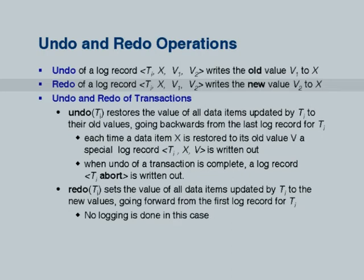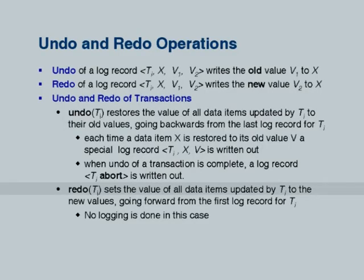What redo Ti does is: it takes the log records for Ti going forward and applies each operation — every time it finds a log record for that transaction it writes that new value to the data item. The data is fetched into the buffer, updated in the buffer, and so on. When the redo is executed you do not do further logging; there is no need since the log record is already there. Undo is slightly different — it takes a transaction which ran partially and undoes everything it did by restoring old values. Importantly, undo has to go in reverse: start with the last log record of the transaction and move backwards.